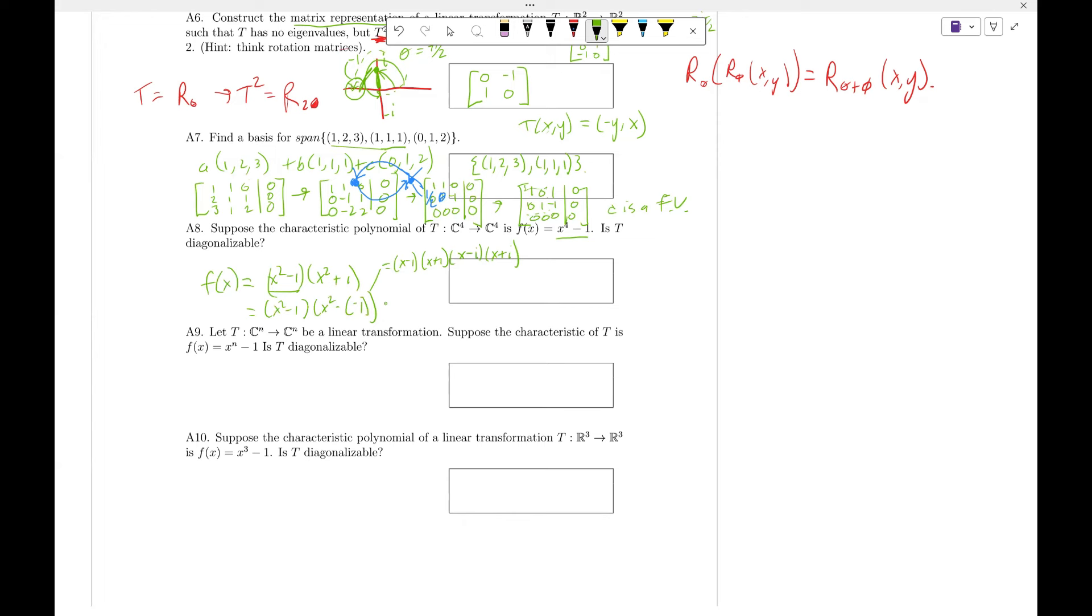Well, this tells me it's a product of distinct linear factors, or all of the eigenvalues, all the roots are different. And because we're going from C^4 to C^4, complex roots are allowed. So yes, t is diagonalizable.